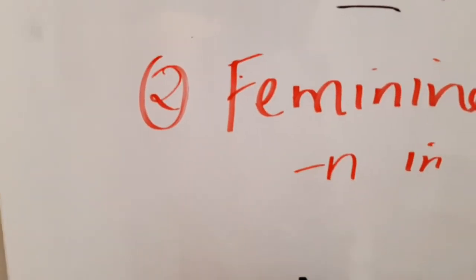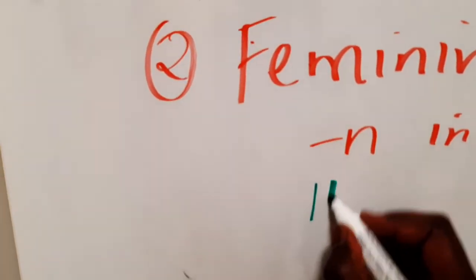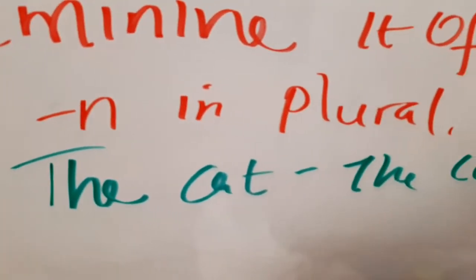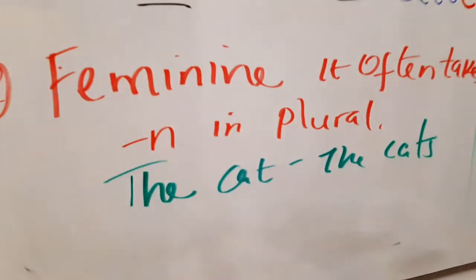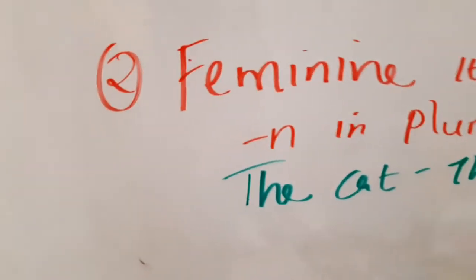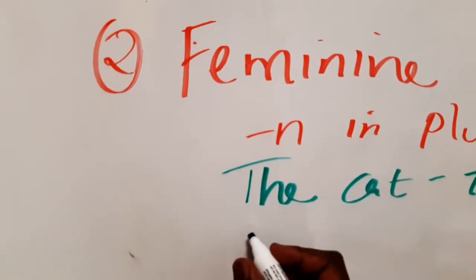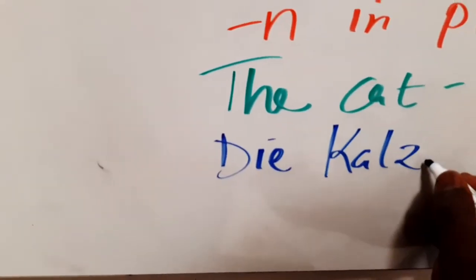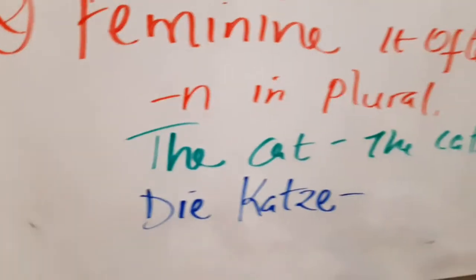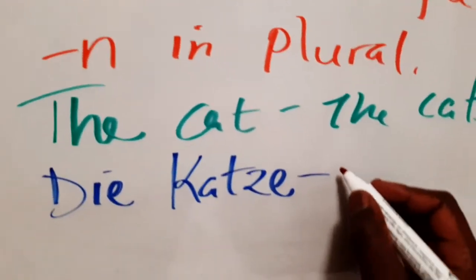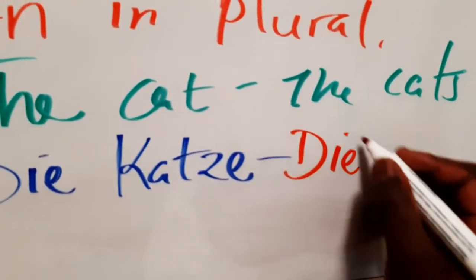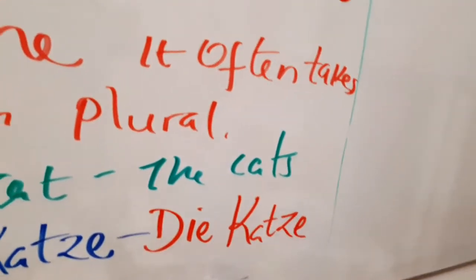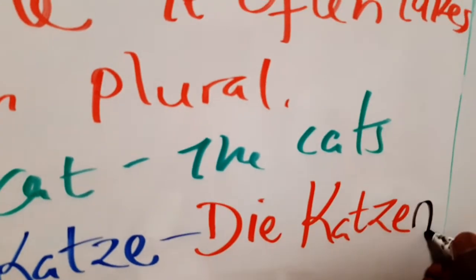So here we'll have the cat. The cat in plural will be the cats. So in German, the cats will be die Katze, and in plural it will be die Katzen. So we have to add -n.